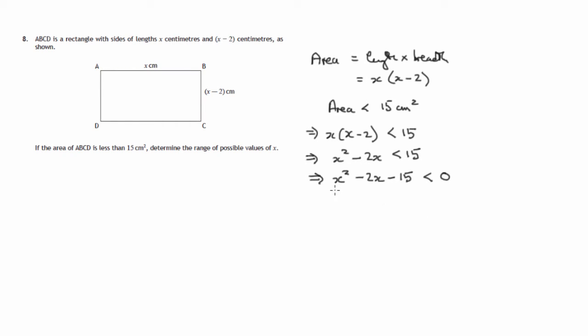So our concern will be what do the values of x squared minus 2x minus 15 look like? In other words, if we have y equals x squared minus 2x minus 15, when can y be negative? What values can x take so that y is negative? Let's look at the graph of this. It's a quadratic graph.